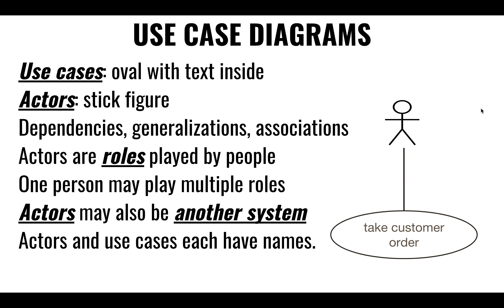Those actors might not necessarily be humans. They might be a bank, some financial institution, or a governmental agency. We would also represent what the different actions are that a particular non-human actor might be doing that interacts with our system.